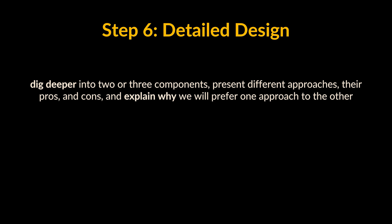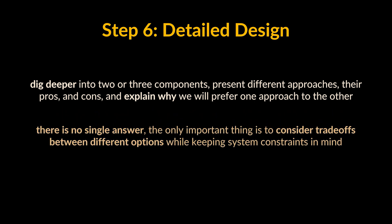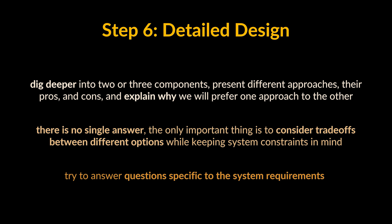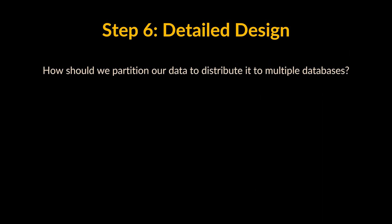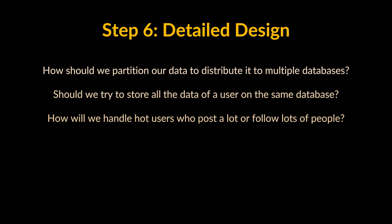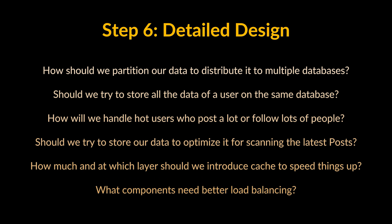Step six: detailed design. Dig deeper into two or three components; interviewer feedback should guide which parts need further discussion. Present different approaches, their pros and cons, and explain why you prefer one over another. Remember, there is no single answer — the important thing is to consider trade-offs between different options while keeping system constraints in mind. Try to answer questions like: How should we partition our data to distribute it to multiple databases? Should we store all data of a user on the same database, and what issues could that cause? How will we handle hot users? How should we store data to optimize for scanning the latest posts? How much caching and at which layer? What components need better load balancing?